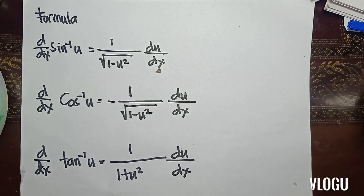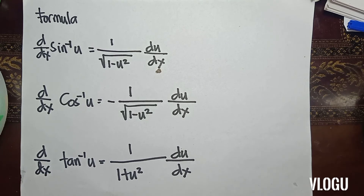The derivative of sine inverse of u is 1 over the square root of 1 minus u squared, times du/dx. The derivative of cosine inverse of u is negative 1 over the square root of 1 minus u squared, times du/dx. The derivative of inverse tangent of u is equal to 1 over 1 plus u squared, times du/dx.